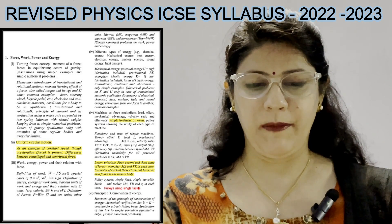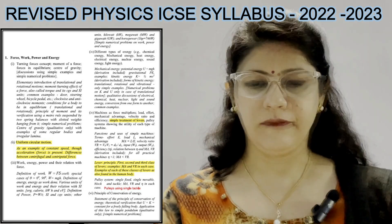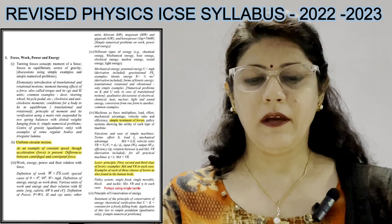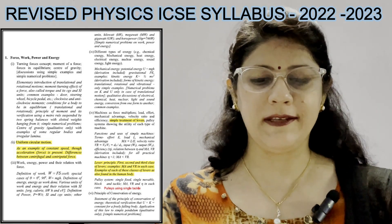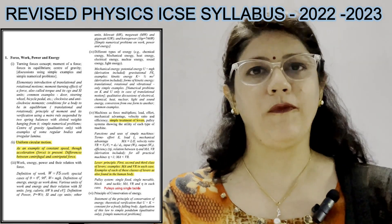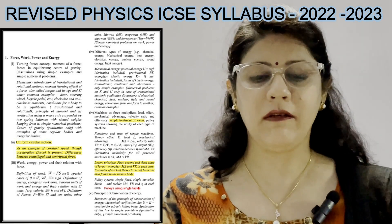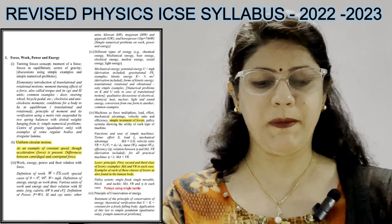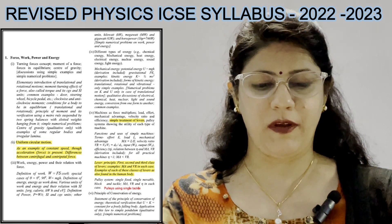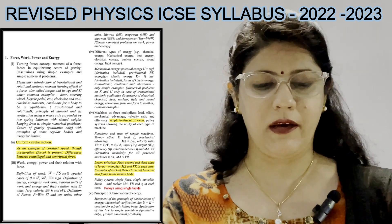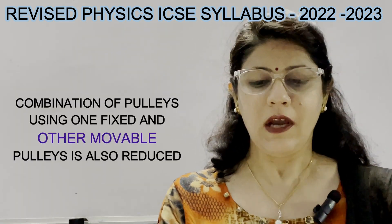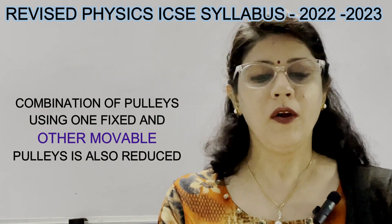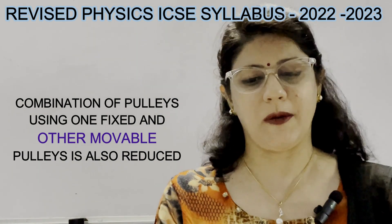Coming to the second chapter, there is no reduction in the syllabus. In the third chapter on Machines, simple treatment of levers is again reduced. This includes the lever principle, first, second, and third class of levers, examples of mechanical advantage and velocity ratio in each case, and examples of each class of levers as found in the human body — all these are reduced from this year's syllabus.